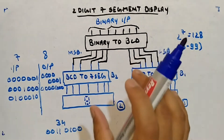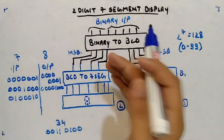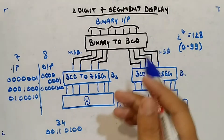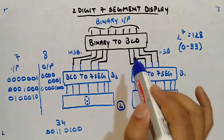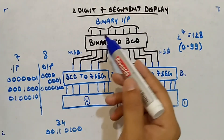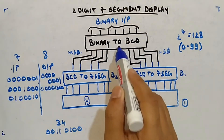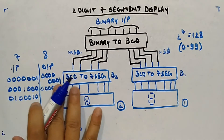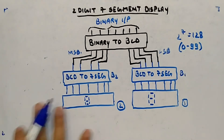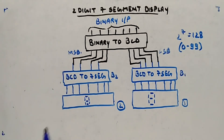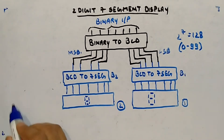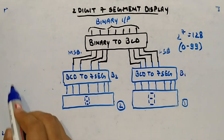I'm just giving you the idea of how it can be implemented — I'm not actually going to implement it because it's a higher-level type of design. Whatever binary input is given, the corresponding BCD output will be given by the binary to BCD circuit. If you want to add a third display, B3 will be there too.